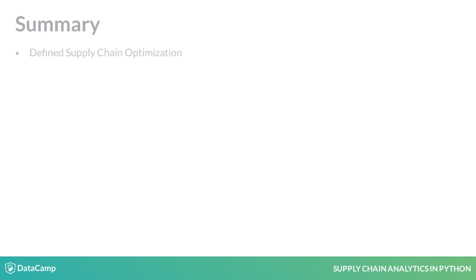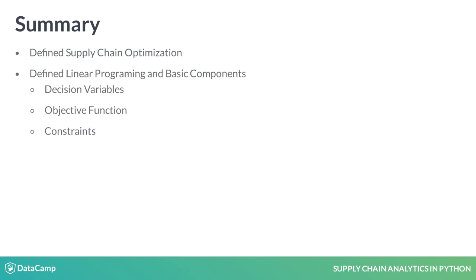In this lesson, we defined supply chain optimization. Through an example, we defined linear programming and its basic components. Finally, we defined the meaning of LP, IP, and MIP.